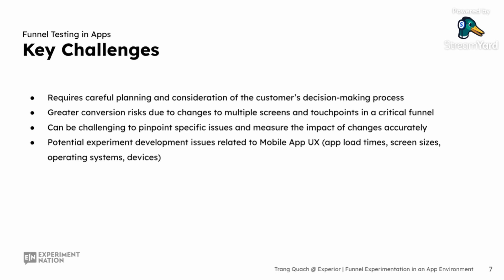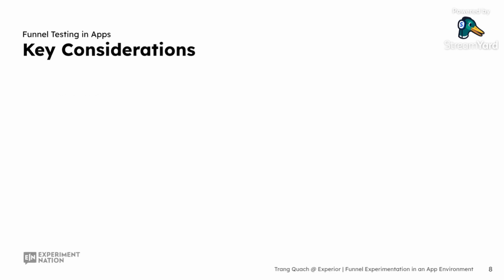When planning a funnel experiment, there are several key considerations that ensure accurate and meaningful results. First, you need to have clear objectives and hypotheses. Without clearly defined goals, it's difficult to measure success. Your hypothesis should be specific to the pain point you want to address within the user journey, setting the foundation for the test.